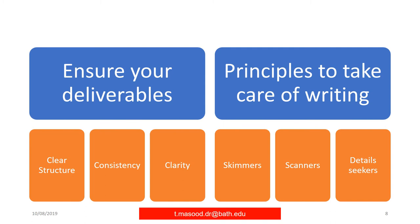Scanners need your writing to be readable and examinable — you must monitor if something has gone wrong. Detail seekers will investigate further to find any errors, so everything must be properly stated. These three reader types must be addressed together to achieve high quality in your write-up.